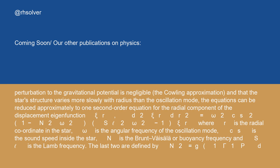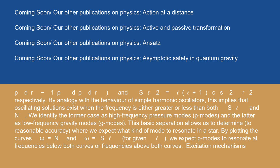The last two are defined by N² = g(1/γ · 1/P · dP/dr − 1/ρ · dρ/dr) and S_ℓ² = ℓ(ℓ+1) c_s²/r² respectively. By analogy with the behavior of simple harmonic oscillators, this implies that oscillating solutions exist when the frequency is either greater or less than both S_ℓ and N.